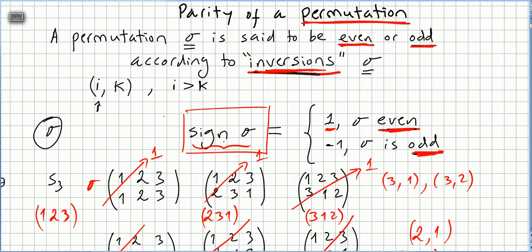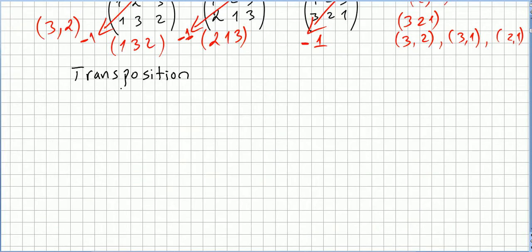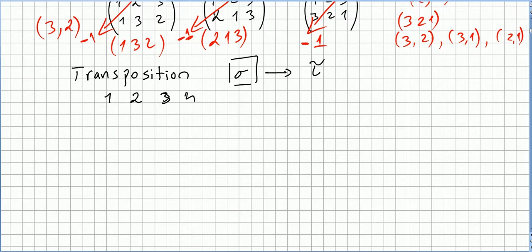Now we are going to introduce the concept of transposition. A transposition is a particular kind of permutation where you only interchange two numbers. The notation for this is usually this Greek T for transposition. One example: one two three four, where one goes to one, four goes to four, two goes to three, and three goes to two.